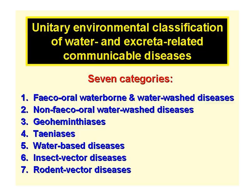So in summary, here we have the seven categories of water and excreta related communicable diseases. Category one comprises the FICO oral waterborne and water wash diseases. Category two, the non-FICO oral water wash diseases. Category three, the geo-helminthiasis — the soil transmitted worm diseases. Category four, taeniasis — the tapeworm diseases. Category five, the water-based diseases such as schistosomiasis. And categories six and seven, the insect vector and rodent vector diseases.